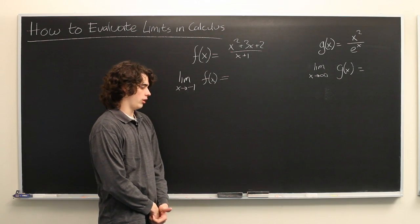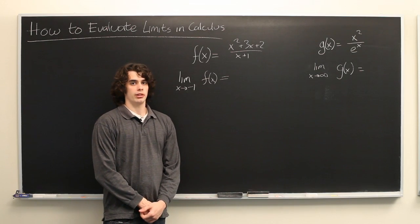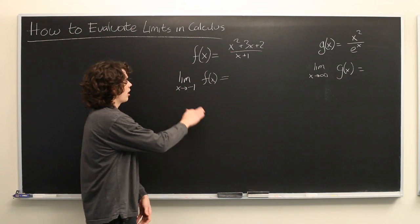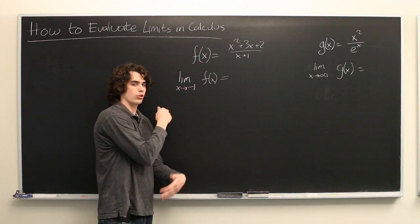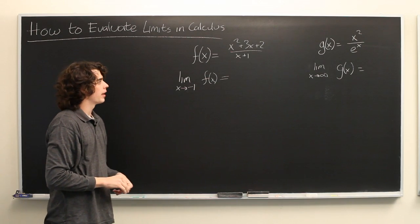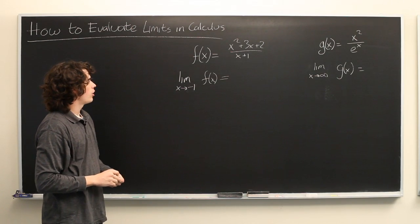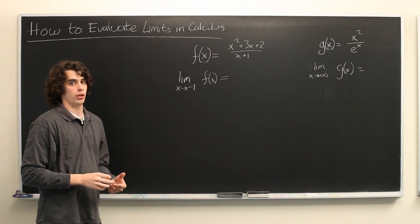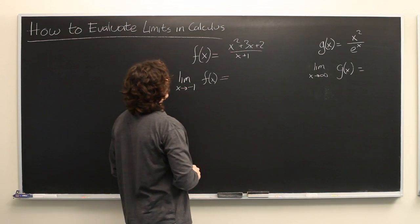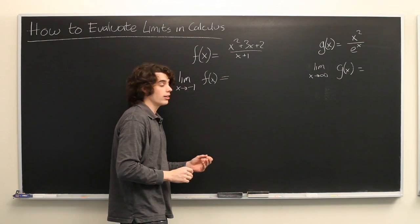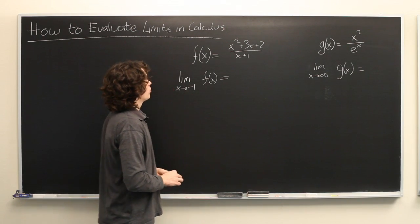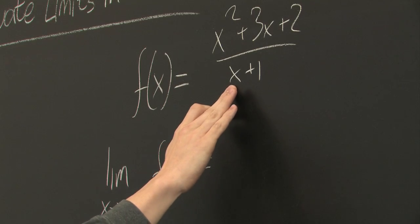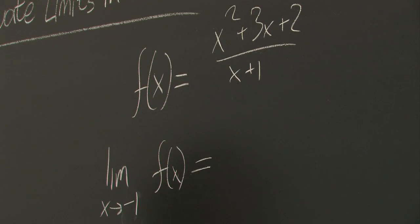So it is frequently the case that when you're given a limit you can simply plug in the limit value into the function and see what you get. However, there are two types of problems that frequently occur. One is when the function is undefined at that point. You'll notice that if you plug in negative one into the denominator here you get a zero, and so f will be undefined.